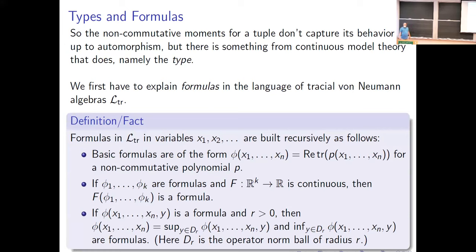There is something in model theory that does tell us how to distinguish tuples up to approximate automorphism — that is the type in model theory. Instead of just testing non-commutative moments, we have to test other quantities: measurements that involve sup and inf operations over unit balls. The formulas in model theory are built up recursively. For the language of tracial von Neumann algebras, the basic formulas are of the form: real part of trace of some non-commutative polynomial. Those are the non-commutative moments discussed before.